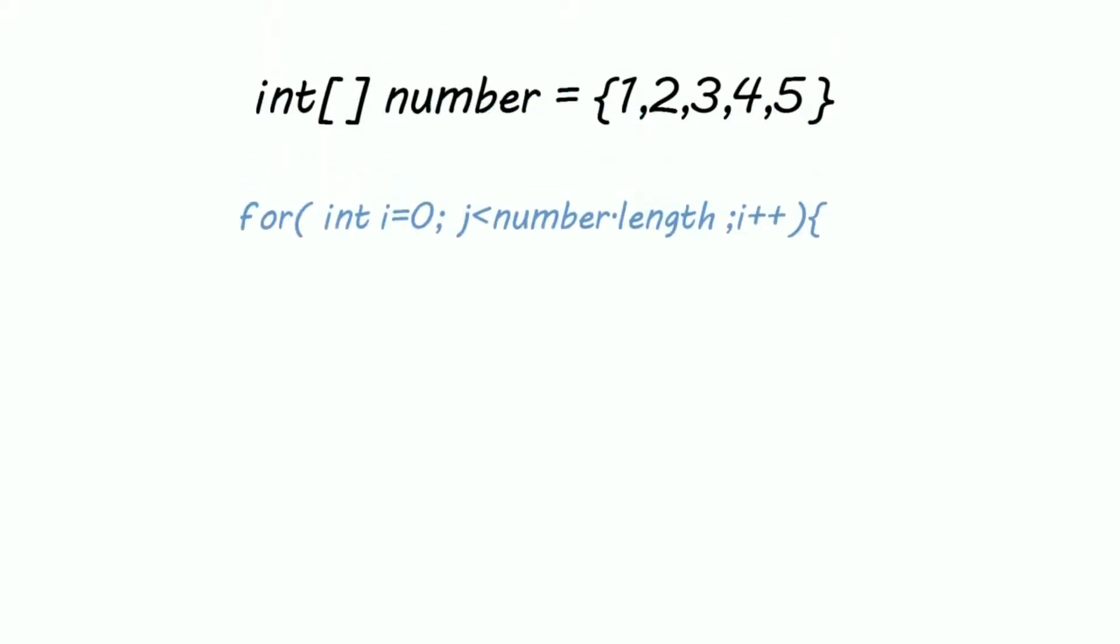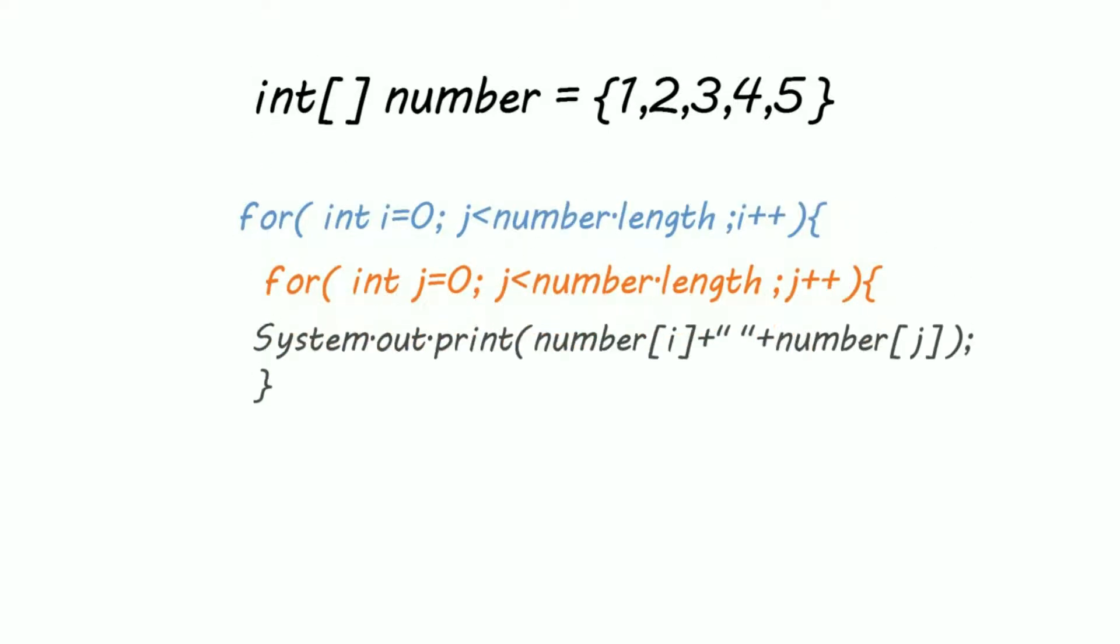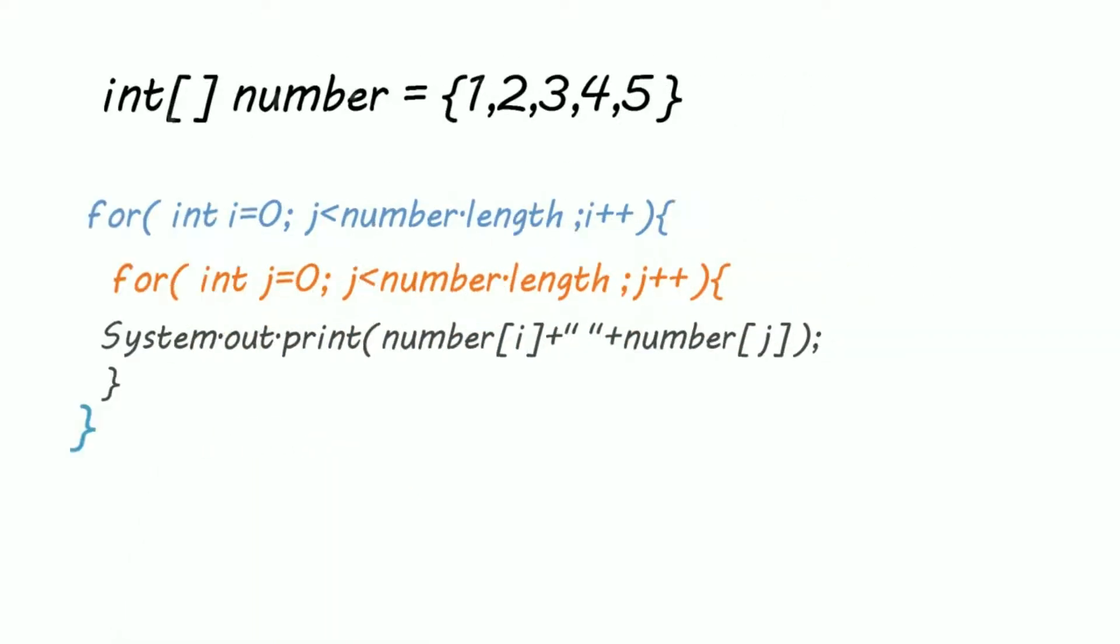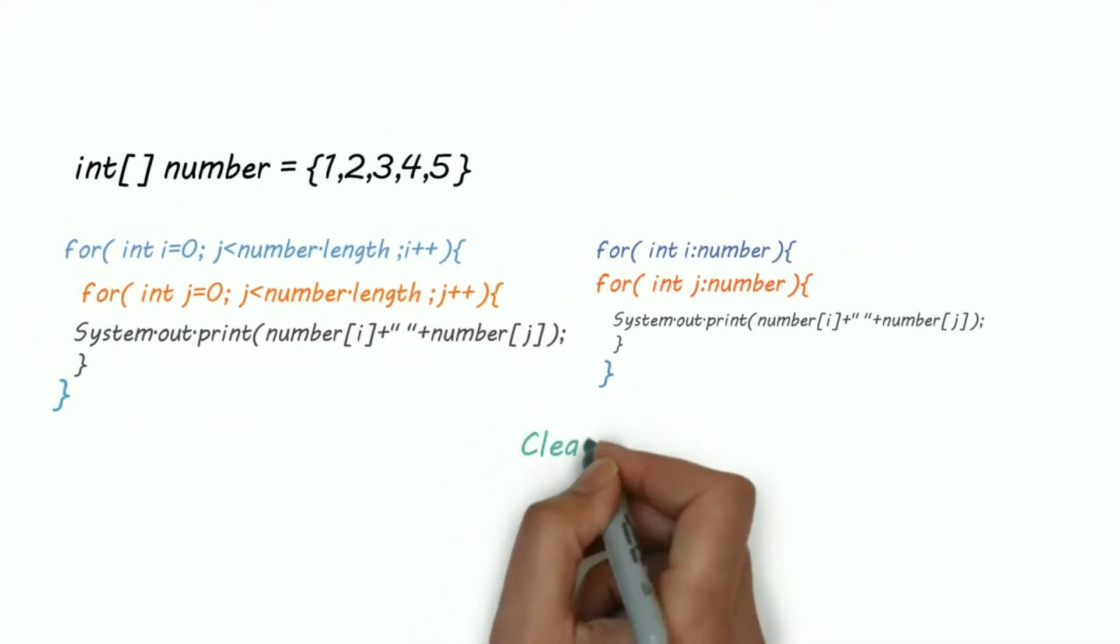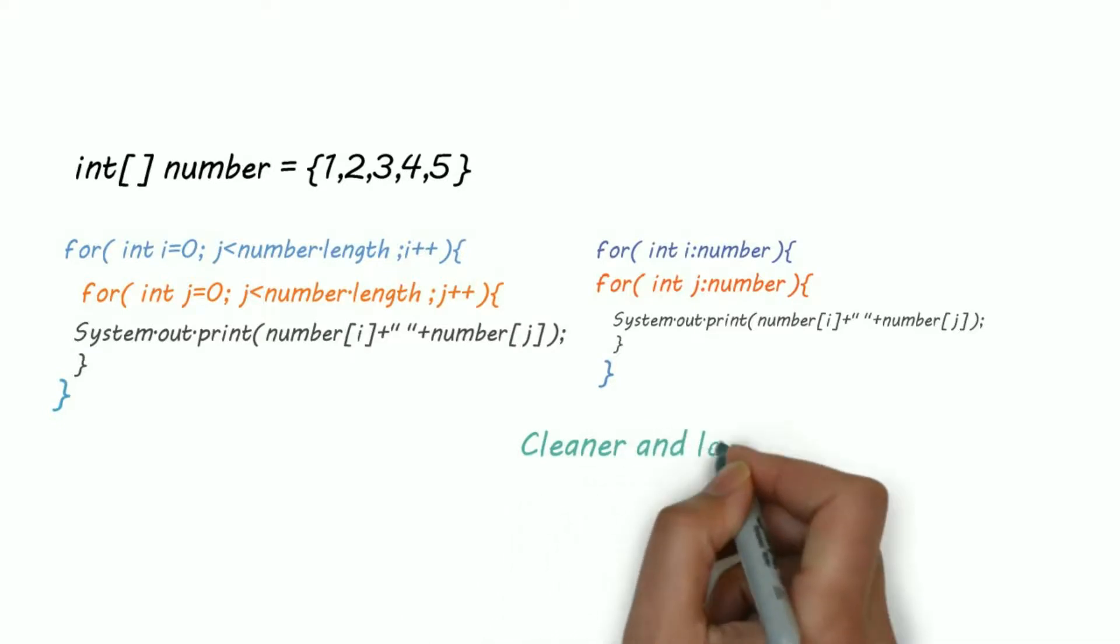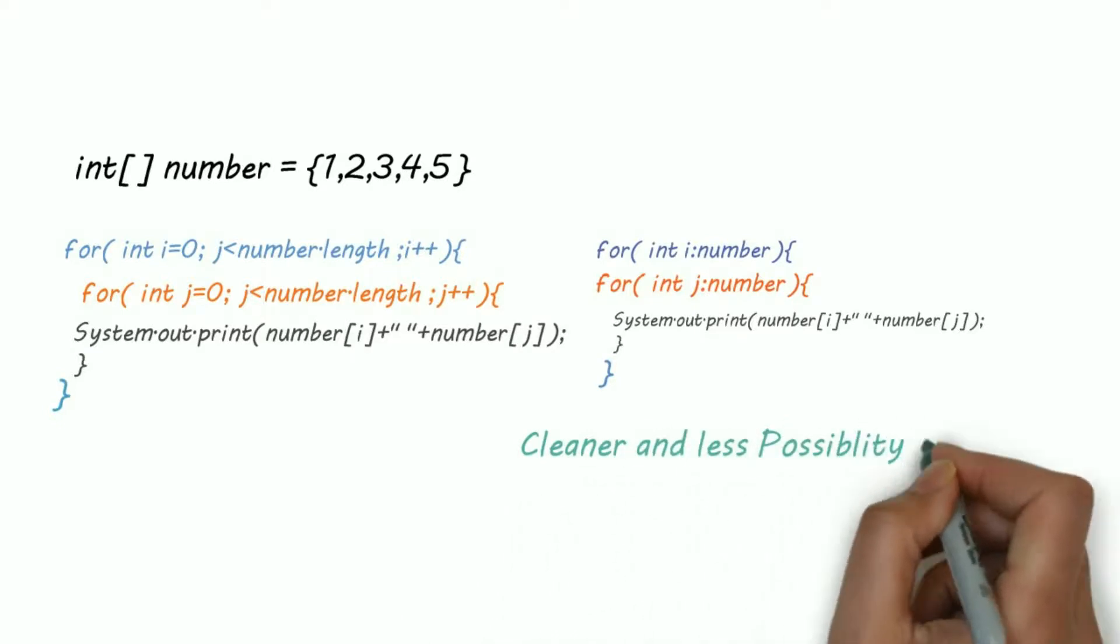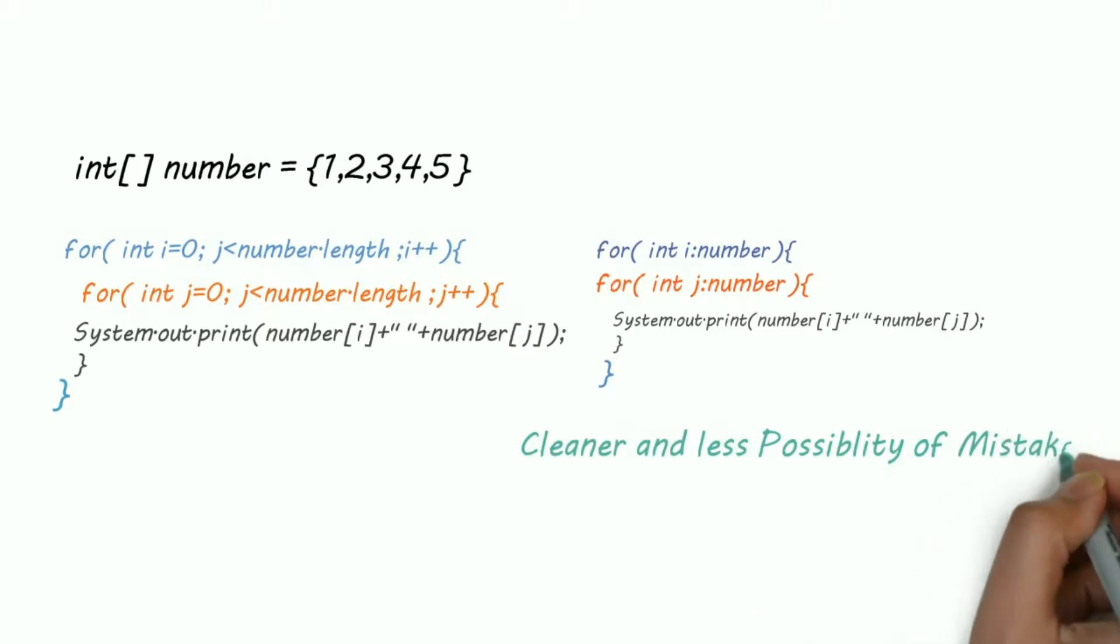While iterating a container, here we are using nested for loops, but instead of using our regular for loop we can use for each. You can see the difference, right? The right side looks much cleaner and there is less possibility of committing errors. So use for each loop where you need to iterate over the entire container, otherwise use our regular for loop if you want to access the elements.